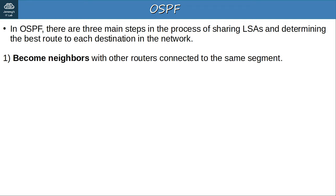Quiz question 2: You want to activate OSPF on R1's G0-1 and G0-2 interfaces with a single command. G0-1's IP address is 10.0.12.1/28 and G0-2's IP address is 10.0.13.1/26. Which command should you use? The answer is C — NETWORK 10.0.12.0 0.0.1.255 AREA 0. This is the only option whose range contains both IP addresses, so it's the only one that activates OSPF on both interfaces.